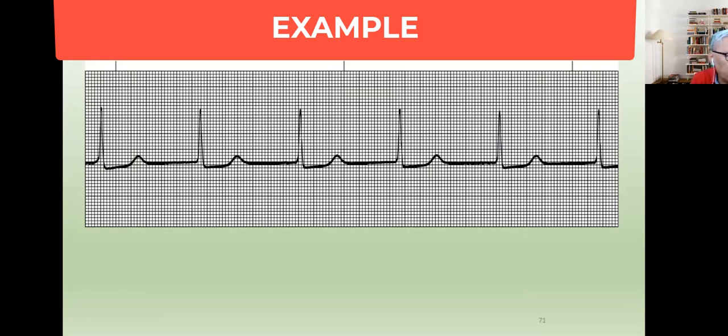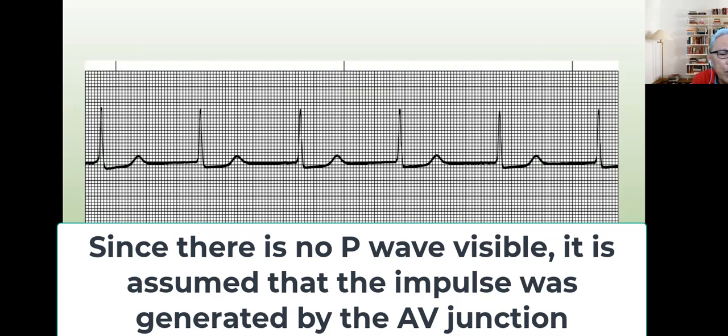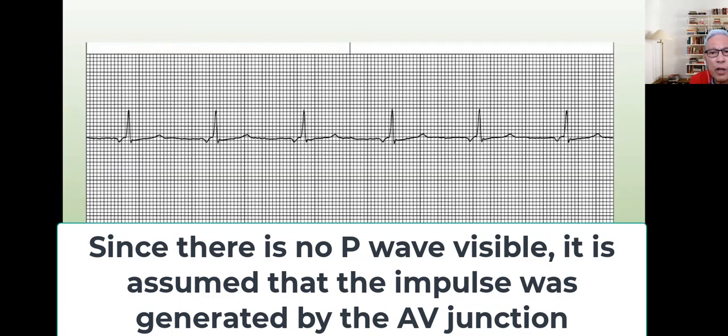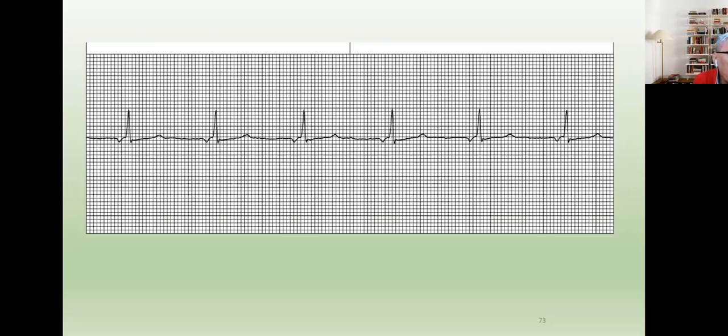These are the reasons then that I assume that these beats are coming from the AV node. If you take a look at this strip, can you find a P wave? So what is our assumption? If we do not see a P wave at all, where did they come from? The AV node. Let me ask you another question: do you see P waves? So if they're inverted, where are they from?